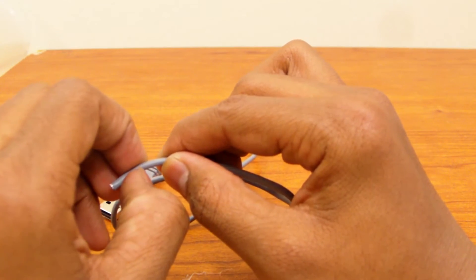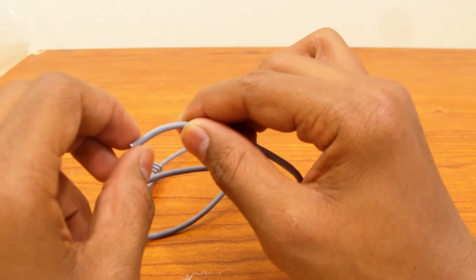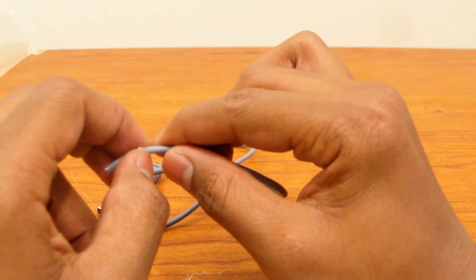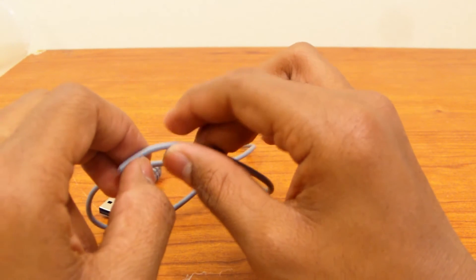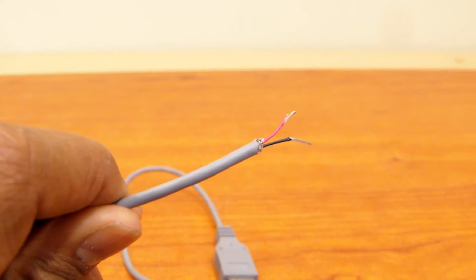That will expose the black, red, green and white wires. Then you can just go ahead and cut the green and white wires off because you won't be needing them. Now I'm going to do it. It's going to look like this.